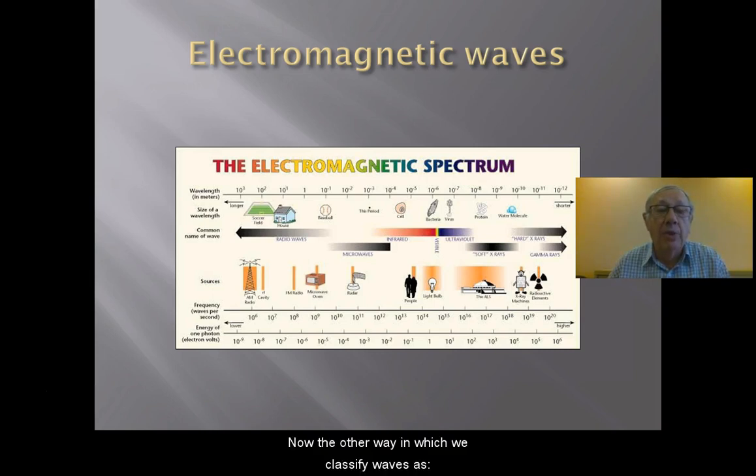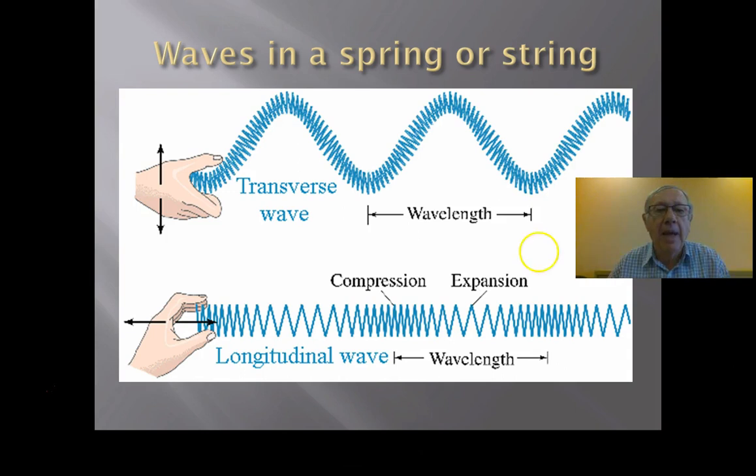Now the other way in which we classify waves is either transverse waves or longitudinal waves. And when we're talking about transverse waves, we're talking about waves which in a sense look like this. And what's happening there is the particles which are carrying the waves move across the direction in which the wave is traveling.